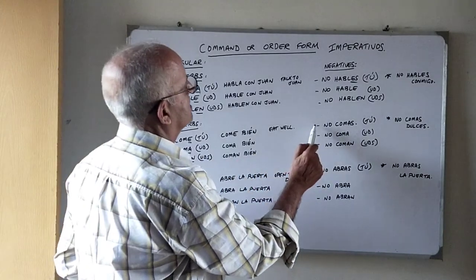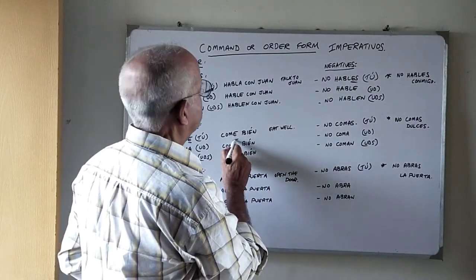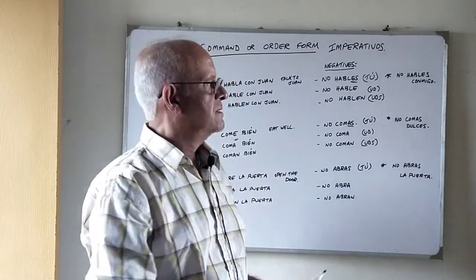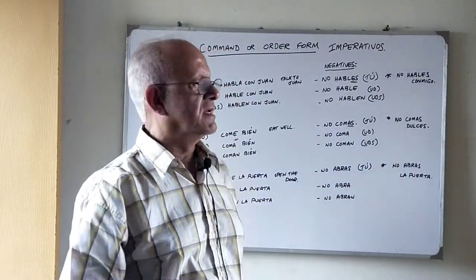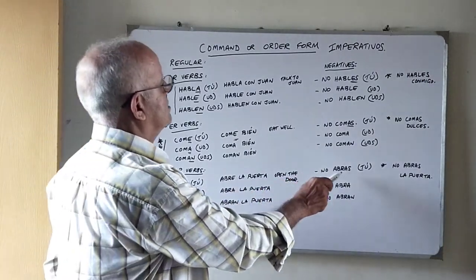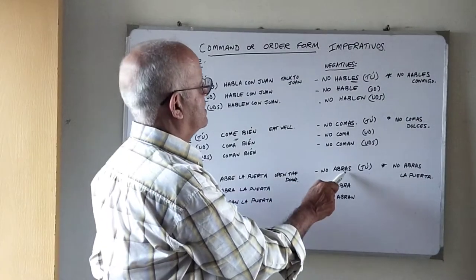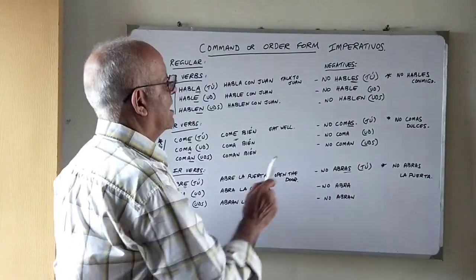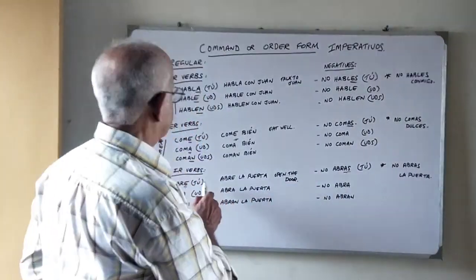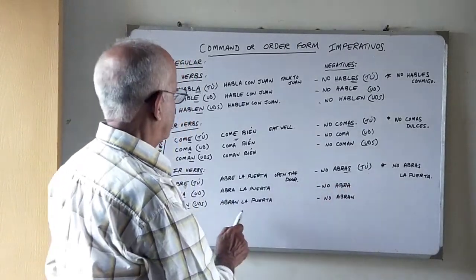The same applies for ER and IR verbs — it only changes in the tú formation. For ER verbs, we replace the E with AS. So NO COMAS DULCES means 'don't eat sweets.' The other formations stay the same as the positive order. For IR verbs, we replace the E of ABRE with AS: NO ABRAS LA PUERTA, meaning 'don't open the door.' The usted and ustedes forms stay the same: NO ABRA LA PUERTA, NO ABRAN LA PUERTA.